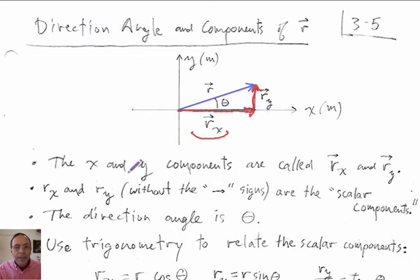And here is ry pointing straight up. Now, if I write rx and ry without the little vector signs, then these are called the scalar components. Now, there's potential for confusion here. In a previous set of notes, I said that when you write a vector without the little vector sign, that means the magnitude of the vector.